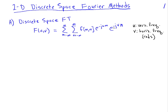In two dimensions, there are Fourier methods that apply as well. So if we have a discrete space image f of m, n, we can take the discrete space Fourier transform, which is analogous to the discrete time Fourier transform.